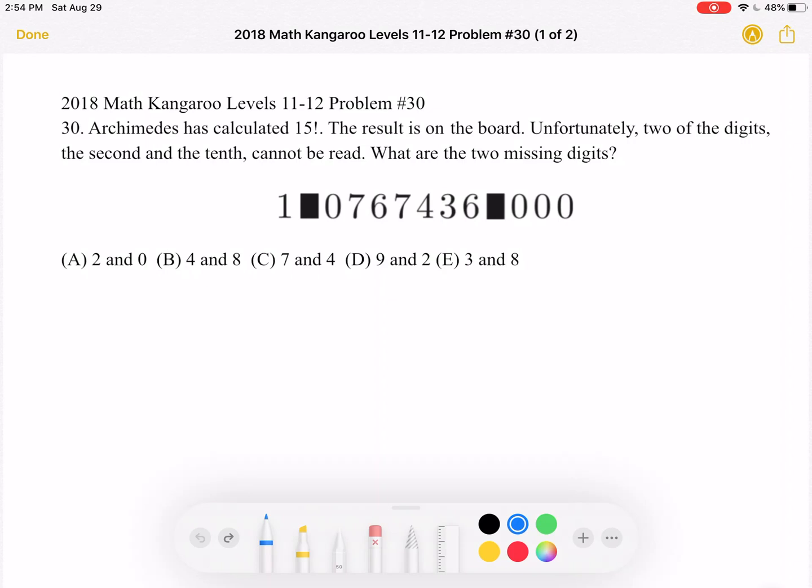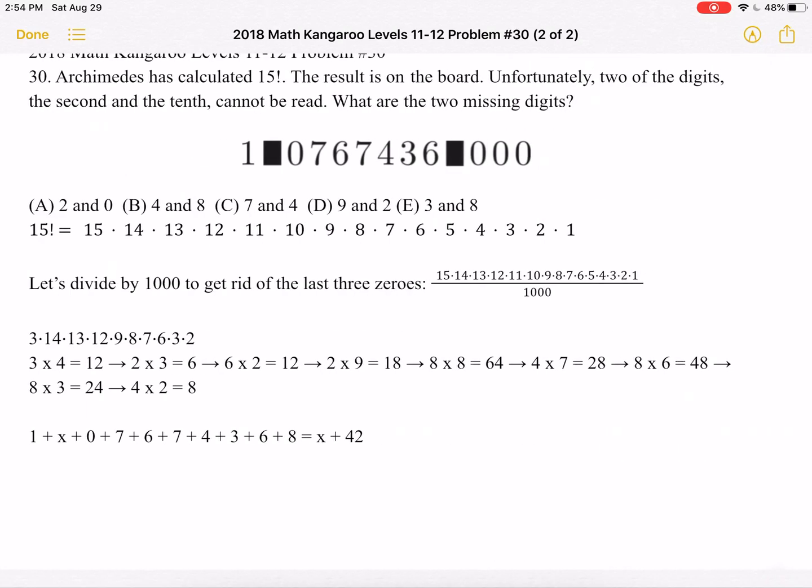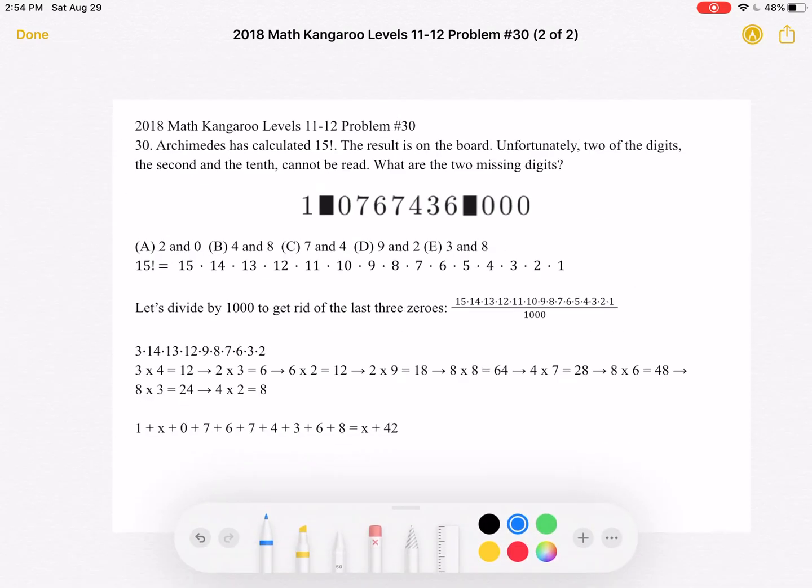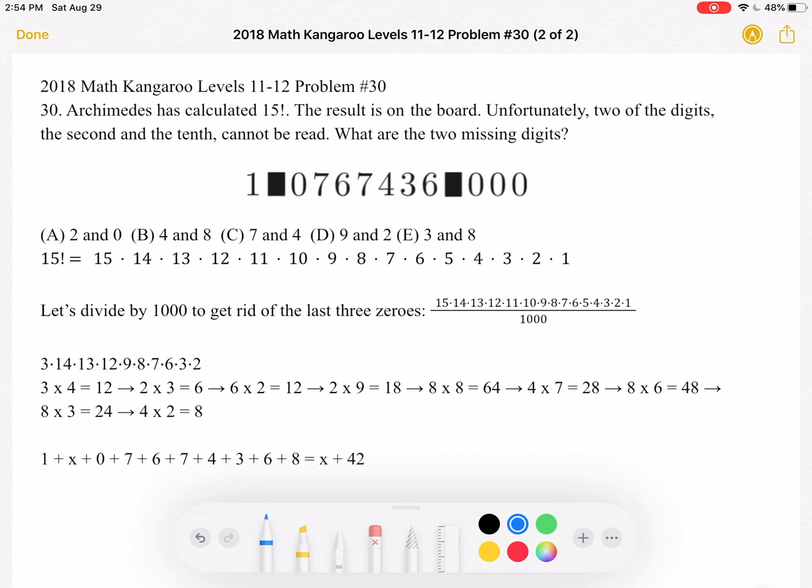This is the problem as it originally appeared on the test and here is where we'll be doing the solution. To start, we know that 15 factorial is equal to 15 times 14 times 13 and so on all the way until 3, 2, 1.